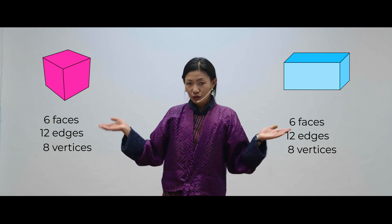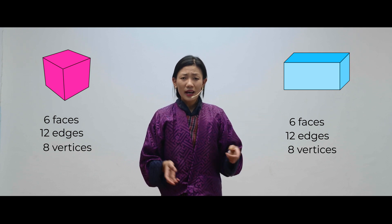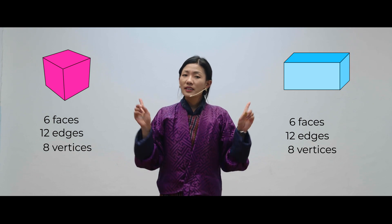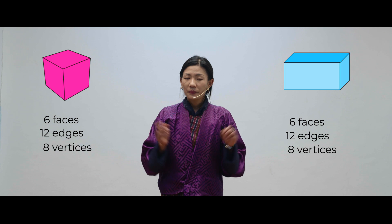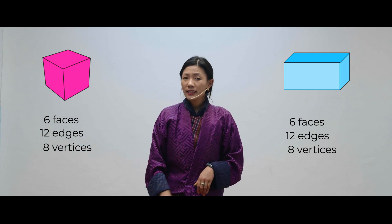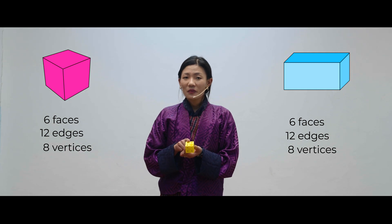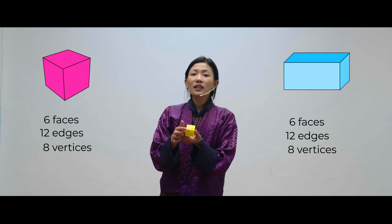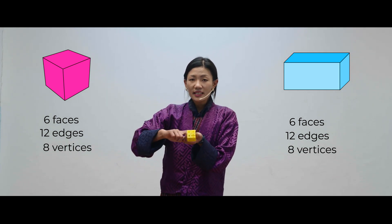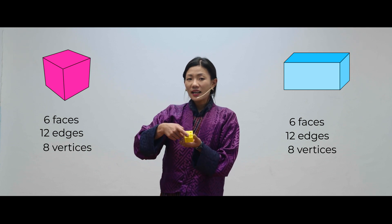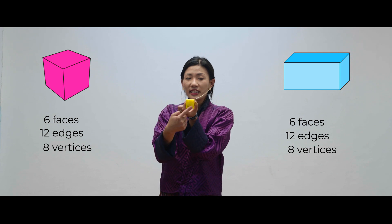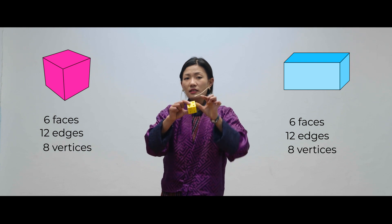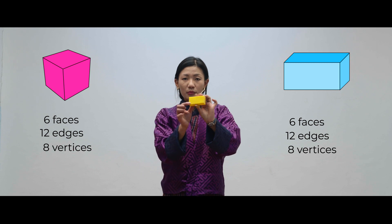If you look at the attributes, both cube and a rectangular prism have equal number of faces, equal number of edges, and equal number of corners. But are these two shapes the same? A cube is a special type of rectangular prism that has all the sides of equal length and all the faces of the same size. If you look at this cube, you will see that it has square faces and they are all of the same size. But you will not see that in a rectangular prism.